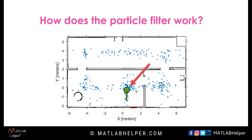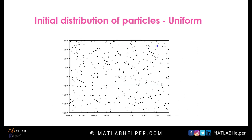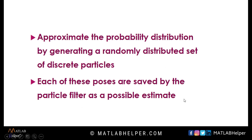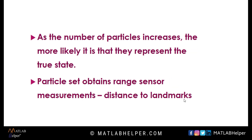Initially, the robot knows only of the map of its environment and is likely to be at any location with any orientation on the map with equal probability. Rather than trying to capture the probability with some smoothly defined function, it is possible to approximate the probability distribution by randomly generating a set of discrete particles, each with a location and orientation. The locations and orientations of these particles are uniformly randomized to represent the uniform probability distribution across the map. Each of these poses is saved by the filter as a possible estimate of the state, and as the number of particles increases, the more likely it is that they represent a probability distribution close to the true distribution.